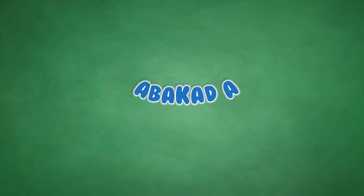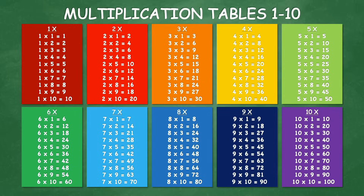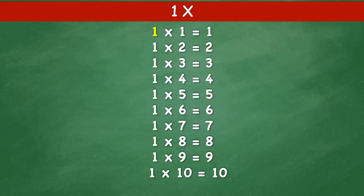Multiplication tables 1 to 10. 1 times 1 equals 1. 1 times 2 equals 2.